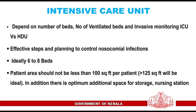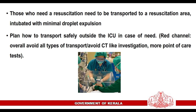Intensive Care Units: Depending on the number of beds, ventilated beds, and invasive monitoring, distinguish ICUs from high dependency units. Ideally 6 to 8 beds per unit; patient area should not be less than 100 square feet per patient, with greater than 125 square feet being ideal. Plan effective steps to control nosocomial infections. Patients who need resuscitation should be transported to a resuscitation area and intubated with minimal droplet expulsion. Plan for safe transport outside the ICU when necessary, and avoid CT investigations if possible, preferring point-of-care tests instead.